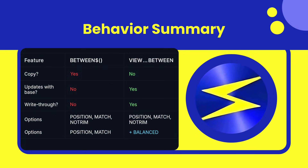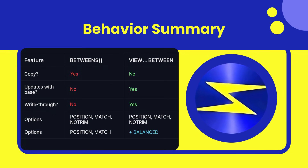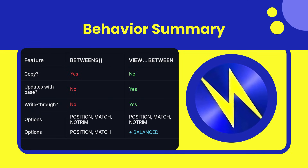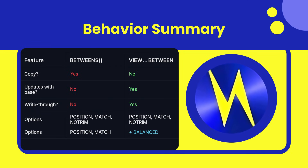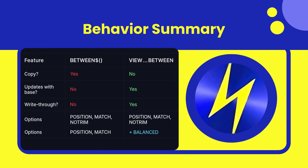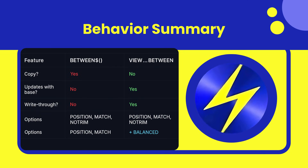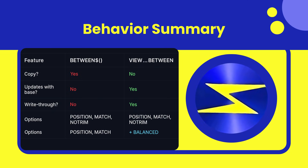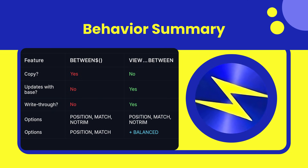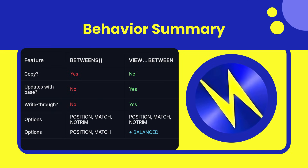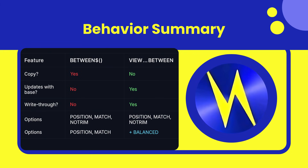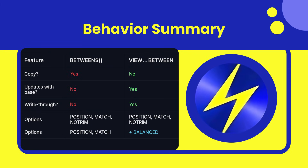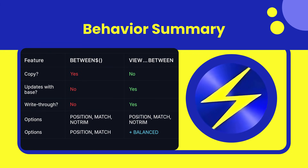This comparison highlights the conceptual shift. String functions create new strings. String views create live references. Views follow the changing base, require no memory allocation, and support write-through operations. They offer the power of pointer slicing without the risks.